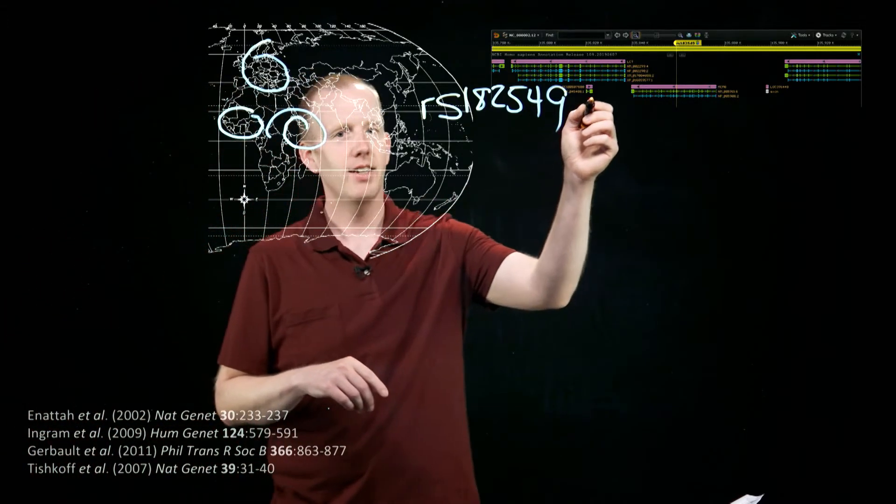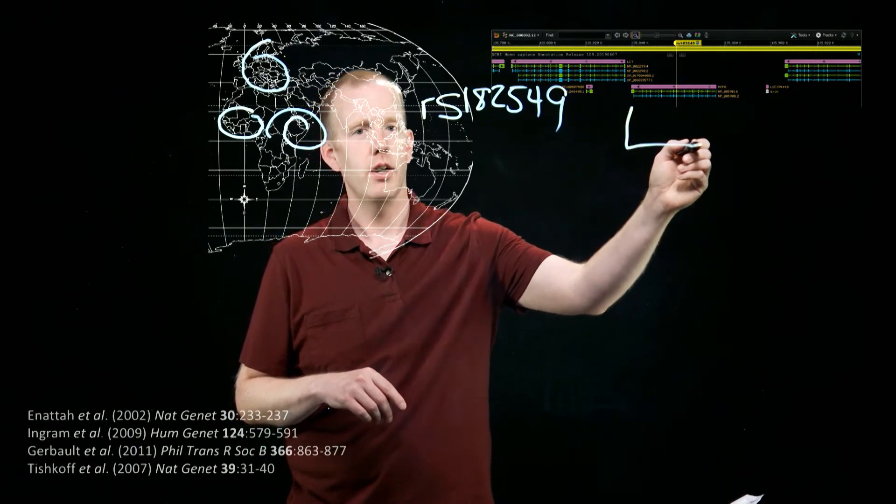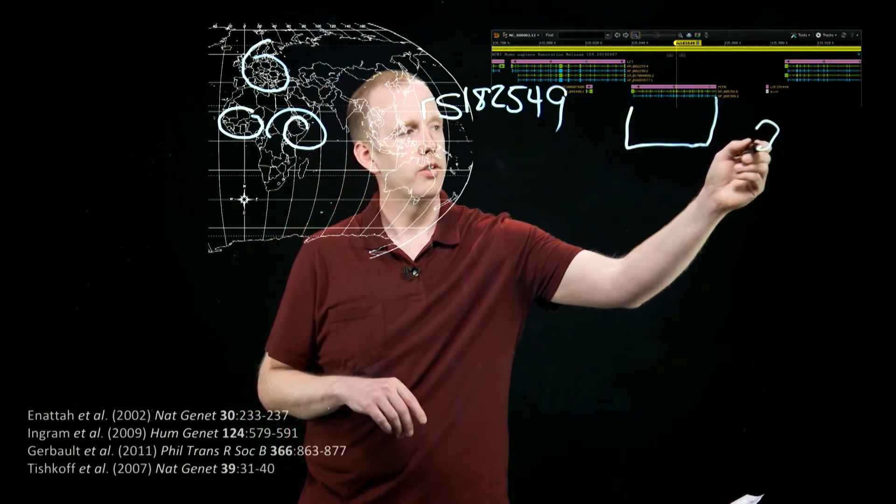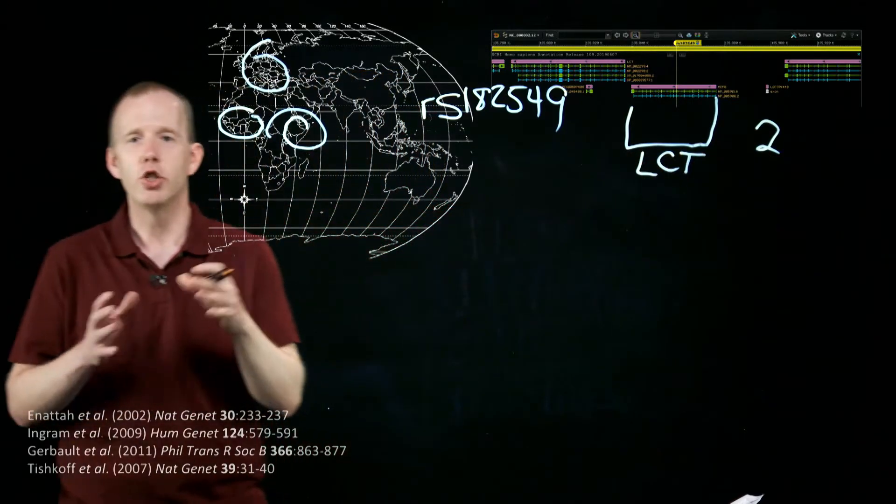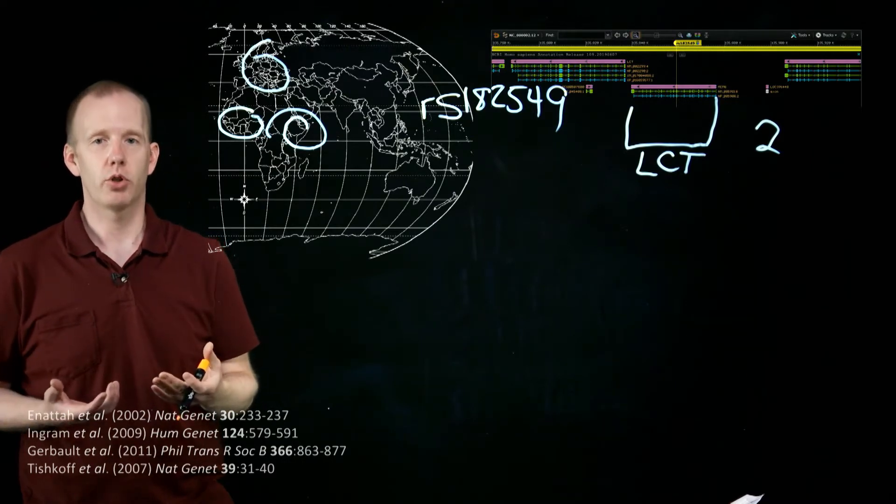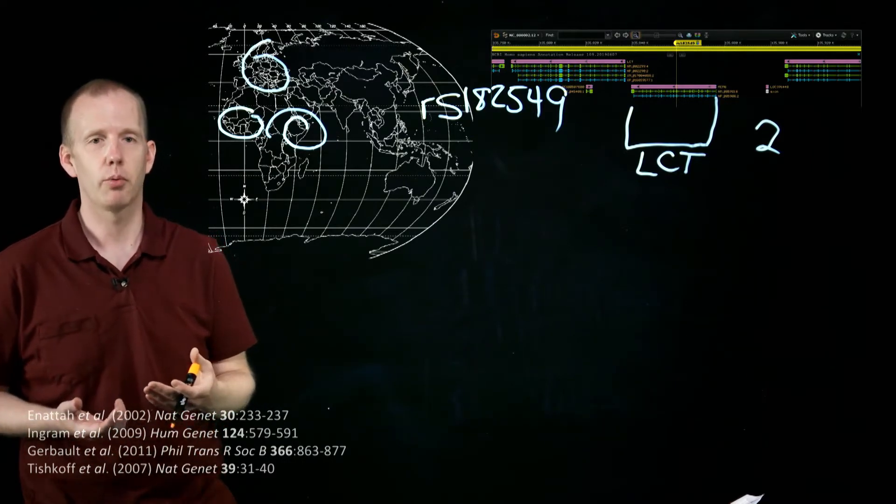And it's nearby, but not in, the gene that encodes lactase. So here, on this part of this chromosome, chromosome 2 in humans, is the gene called lactase. It's a gene that encodes a protein, an enzyme, that is the enzyme that breaks down milk sugars, that lets us digest milk products.